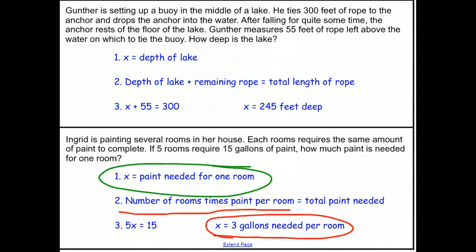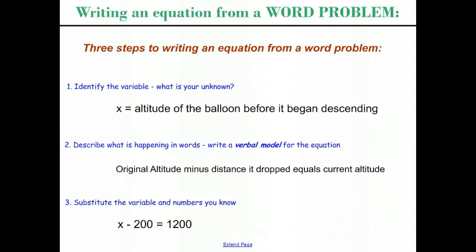Again, quick review. To write a word problem, to take a word problem and turn it into an equation, we follow three steps. First, we have to know what our variable is, what is the unknown. Two, we have to describe what is happening in words using a verbal model for the equation that describes exactly what's going on in the scenario in a few short phrases, and finally substituting in the variables that you know and the numbers.